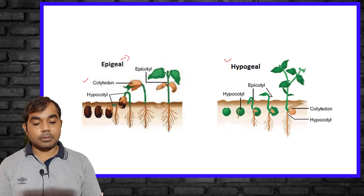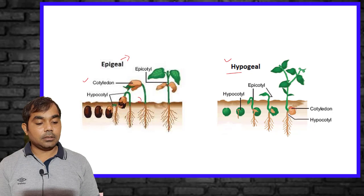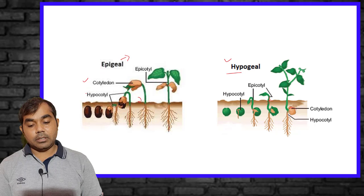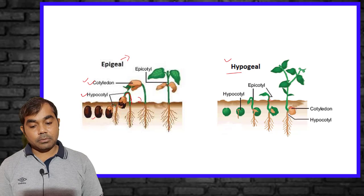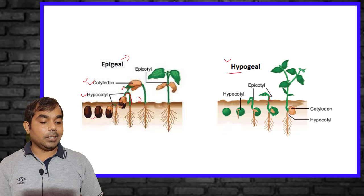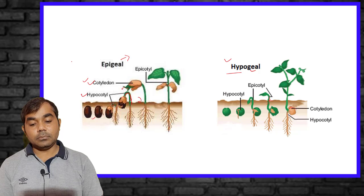In epigeal germination, the cotyledons come out above the ground and then primary leaves form. In hypogeal germination, the cotyledons remain inside the soil and the first leaf emerges from the soil. The hypocotyl elongates in epigeal germination, bringing cotyledons above ground. Epigeal germination is found in mung bean.